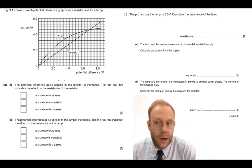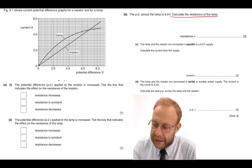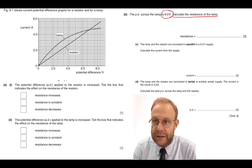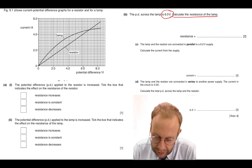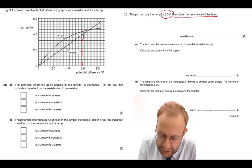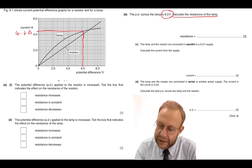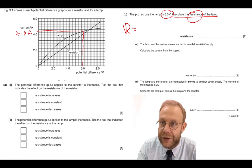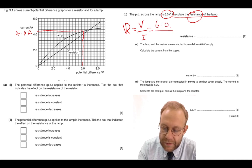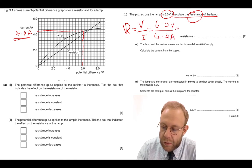For 7 part B, calculate the resistance of the lamp at 6 volts. Reading from the graph at 6 volts, the lamp has a current of 4.4 amps. To calculate the resistance, resistance is the ratio between voltage and current — so 6 divided by 4.4 gives us 1.36 ohms.